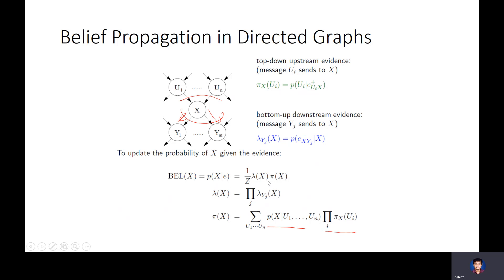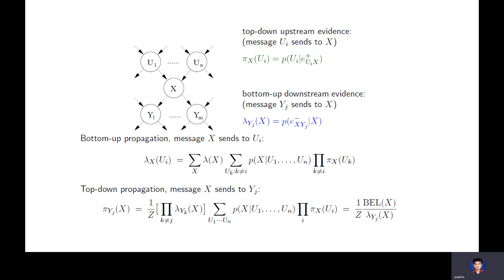This process is recursive: messages propagate bottom-up (from upstream nodes toward X) and top-down (from X toward downstream nodes). At any node, messages arrive from both directions, you multiply them, and pass them on upstream and downstream. p(X|E) is proportional to λ(X) · π(X). This is like standing at a junction: messages come from one side and the other, you multiply them and pass onward. This can be easily implemented — many probabilistic programming languages in Python implement this basic belief propagation algorithm.